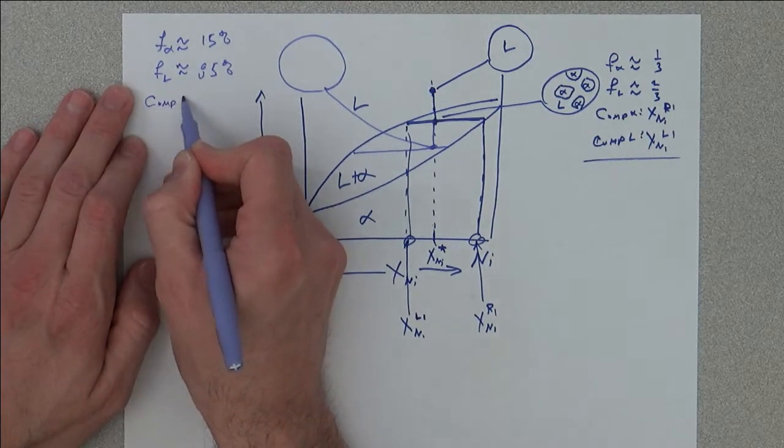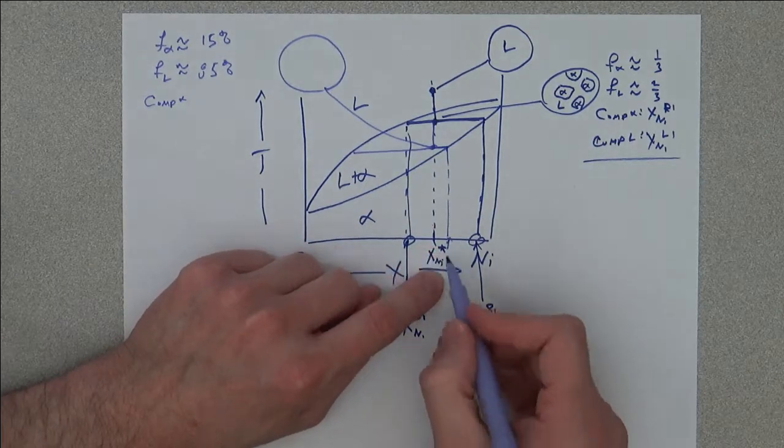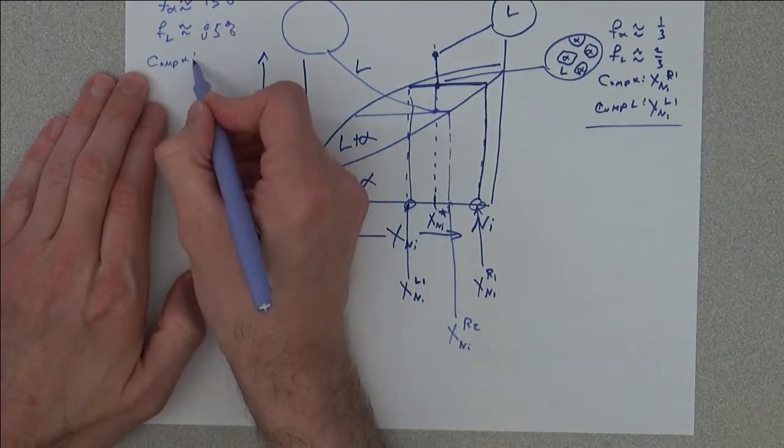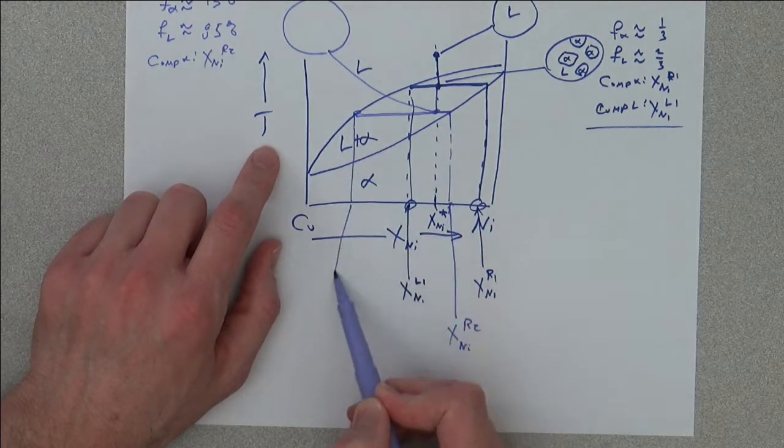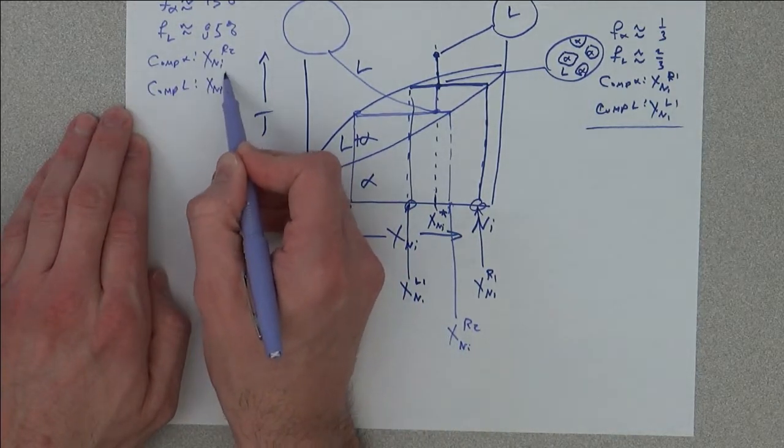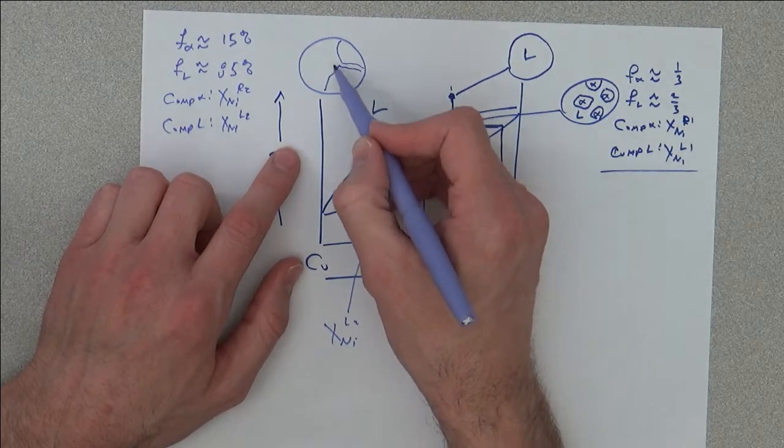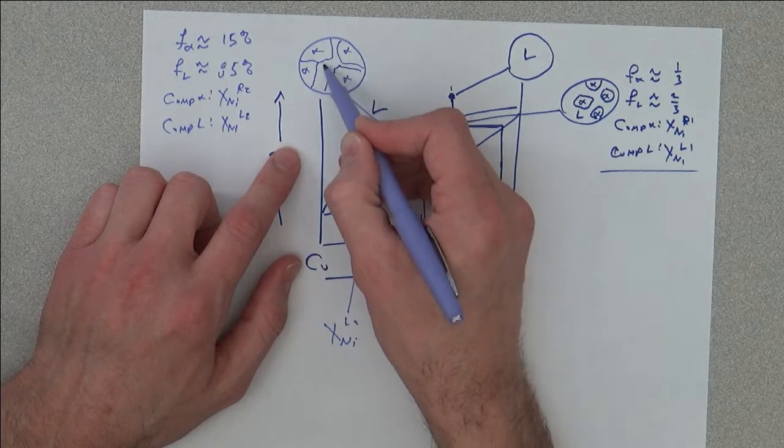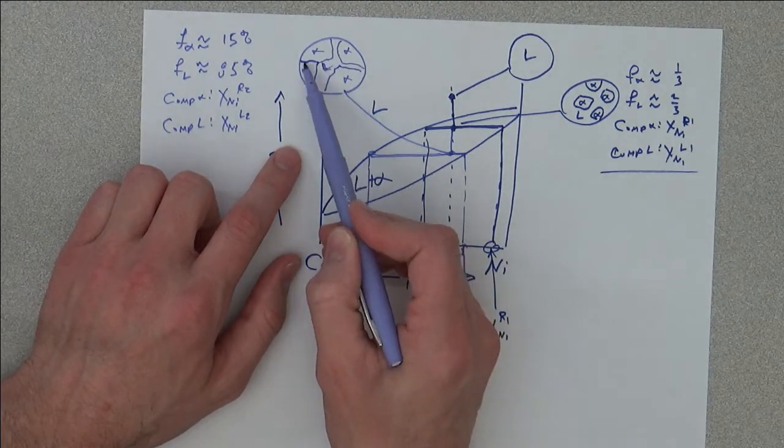The fraction of the liquid then is around 85 percent. The composition of alpha is determined by going over, drawing a line down to X_Ni R2, and the composition of the liquid comes from X_Ni L2. The microstructure looks like maybe some alpha growing together with mostly liquid. You're going to have mostly alpha, some liquid, and some of the alpha might have bumped and grown into each other making phase boundaries, but mostly there's liquid between them.